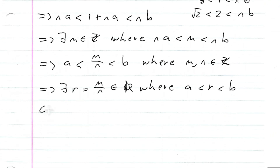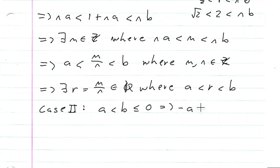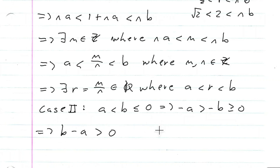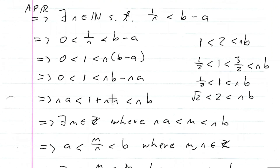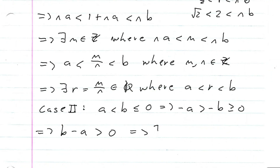Now for the second case, it is literally the same argument. If a < b ≤ 0, this implies that -a > -b ≥ 0. If I add b to both sides, I get b - a > 0, and then it's the exact same argument from Case 1. If b - a > 0, I can follow this exact same process to get that there exists an r contained in the rationals such that a < r < b.